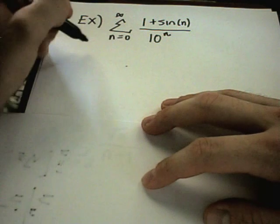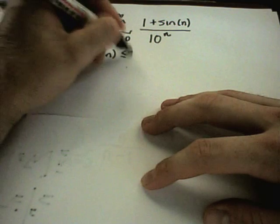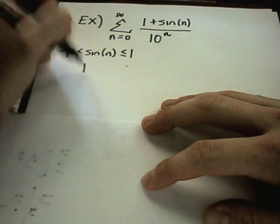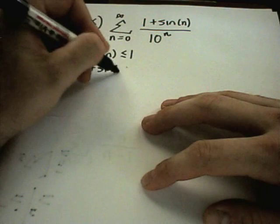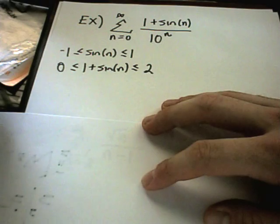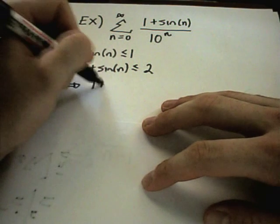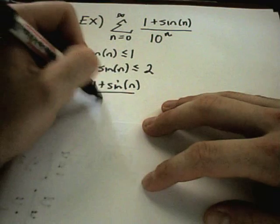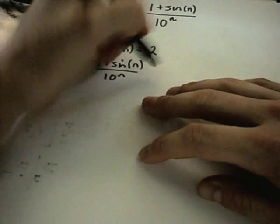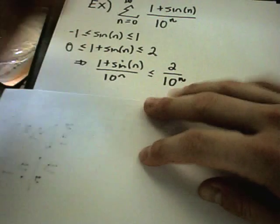The trick, if you have sine or cosine, is to recall that sine is always between positive 1 and negative 1. So if we add 1 to the middle, 1 plus sine of n is always between positive 2 and 0. That means 1 plus sine of n over 10 to the n is going to be less than or equal to 2 over 10 raised to the n.